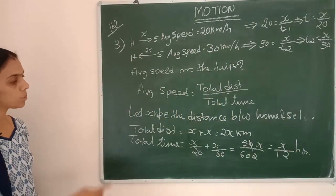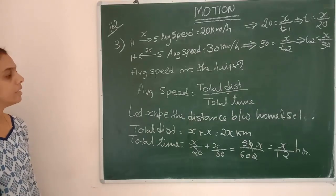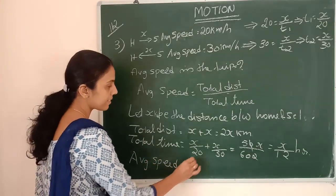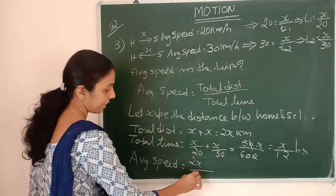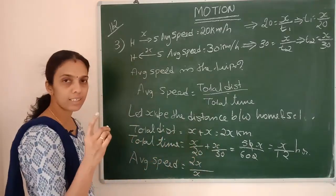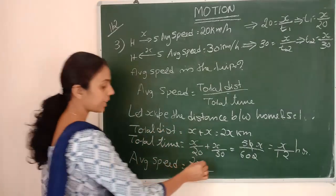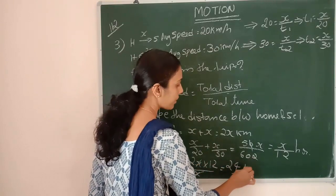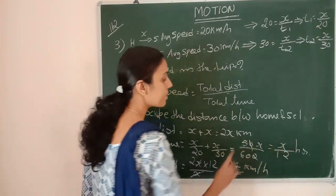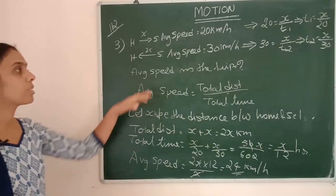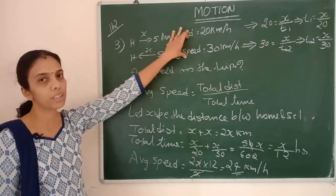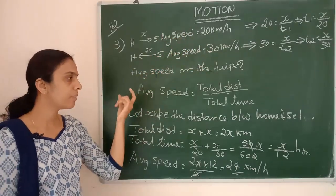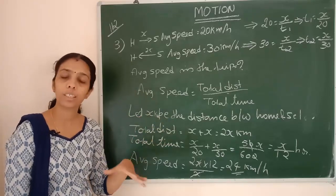Now we have total distance 2x and total time x over 12. Average speed equals 2x divided by (x/12). Since the denominator is a fraction, we take the reciprocal and multiply, giving 24 kilometers per hour. Don't make the mistake of just averaging 20 and 30 to get 25 — the correct method is total distance divided by total time, which gives 24 km/h.